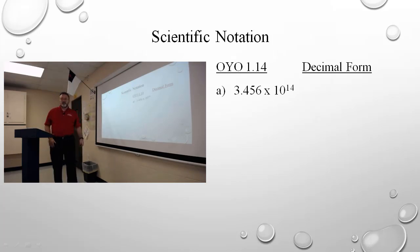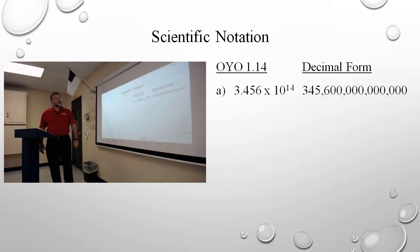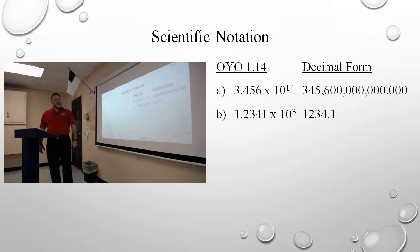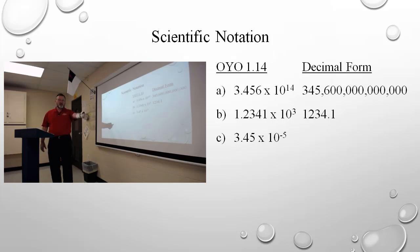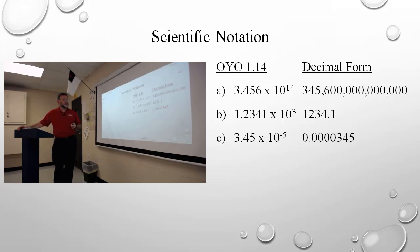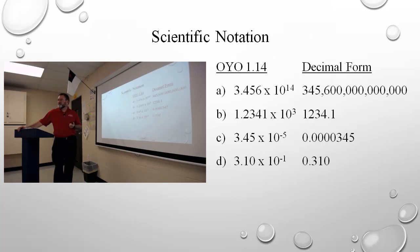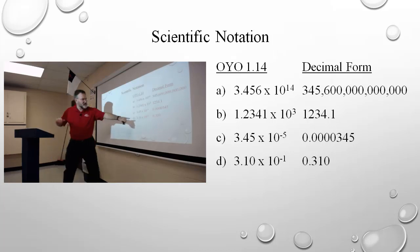Now, we're going to go back to the decimal form. 3.456 times ten to the fourteenth — every one of those are written down and I simply move the decimal to the right 14 places. 1.2341 times ten to the third: write down every place, move the decimal 3 to the right. 3.45 times ten to the negative fifth: write down all three digits, move the decimal to the left five places, and place a leading zero to indicate that it's truly a decimal point. 3.10 times ten to the negative first: I'm going to write all three of those digits down and move the decimal place one place to the left, adding a leading zero to make it correct form. And the zero remains — remember, the zero is significant here, so it remains.